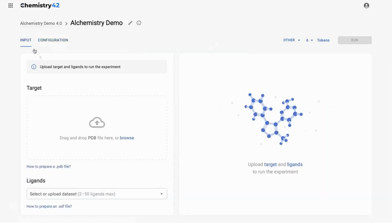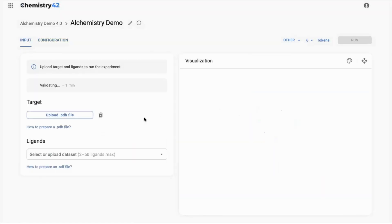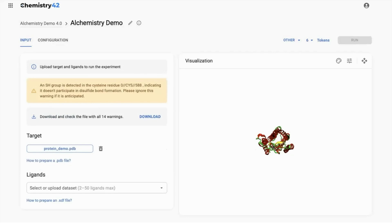Upon uploading your PDB file, Alchemistry automatically starts validating your protein system, flagging any inconsistencies and providing detailed correction instructions.